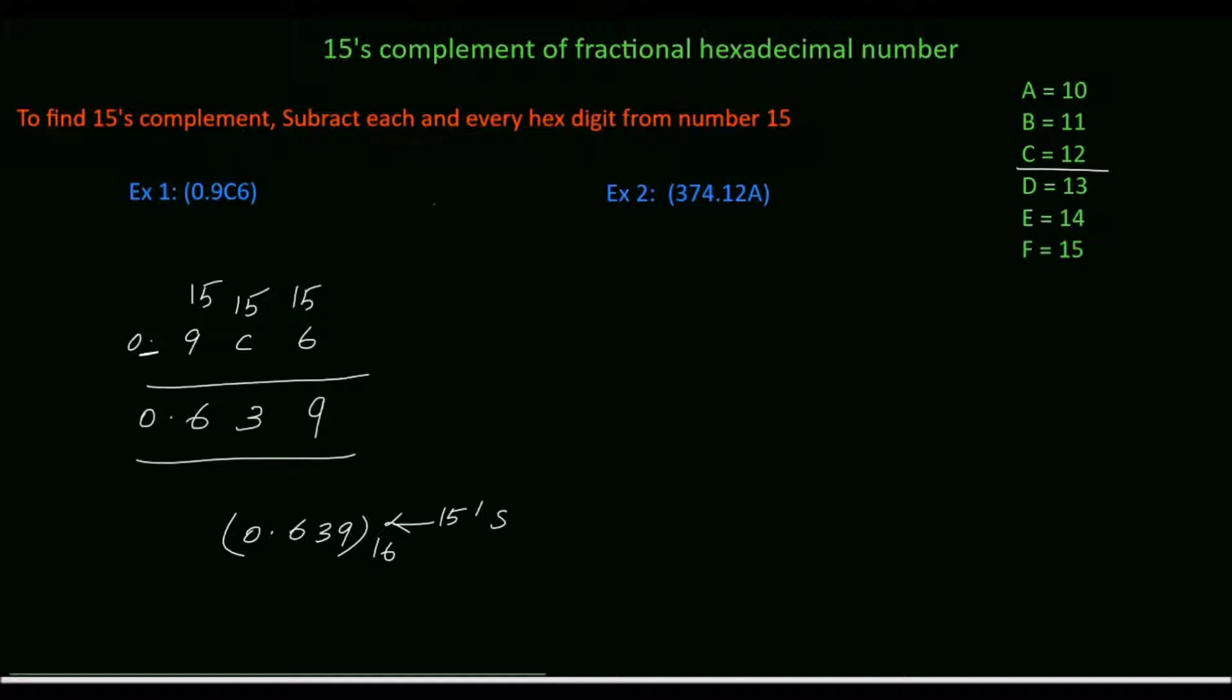Next, we will solve example 2. The given hexadecimal number is 374.12A. Subtract the digits from 15.